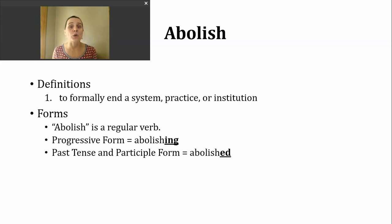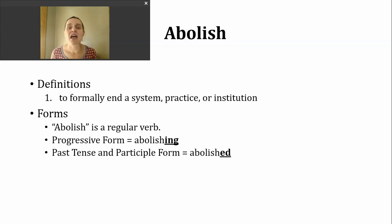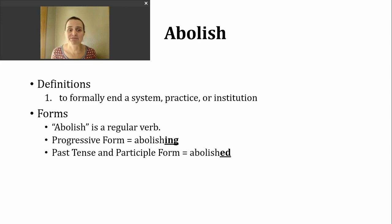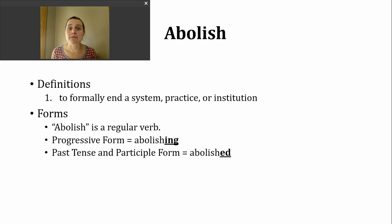So they might be advocating or telling people we need to abolish some sort of practice. This verb is a regular verb, and I want to note one thing about pronunciation — this will become more important as we look at related words. Abolish. The A is making an 'uh' sound. Abolish. If we want to make the progressive form, all we need to do is add -ing to form 'abolishing.' The past tense and participle form is made by adding -ed. Because the verb ends in a 'shh' sound, the -ed is going to make a t sound.